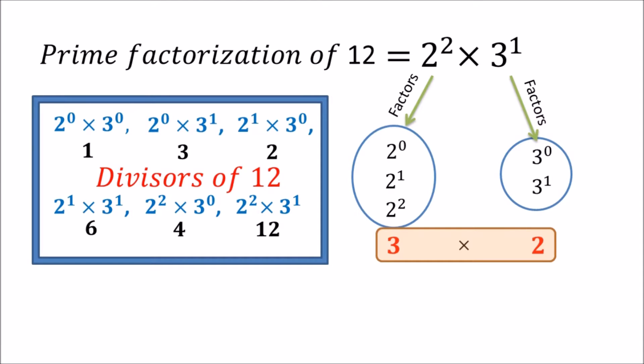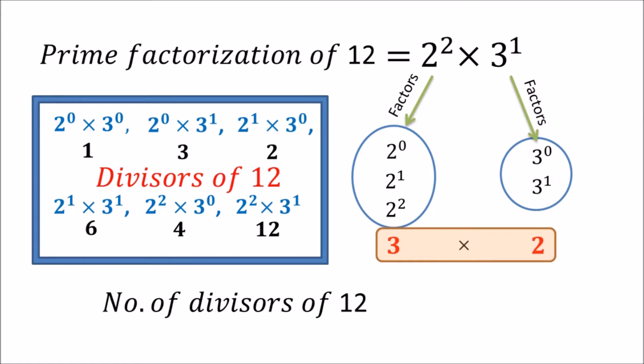So the number of divisors of 12 equals 6. Here the first factor 3 is 1 greater than the power of 2, and 2 is 1 greater than the power of 3, which is 1. The formula holds true: (2+1)(1+1) = 6.